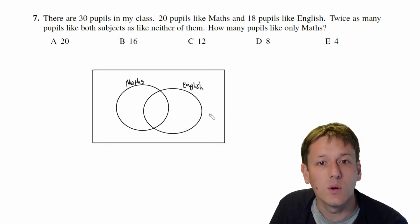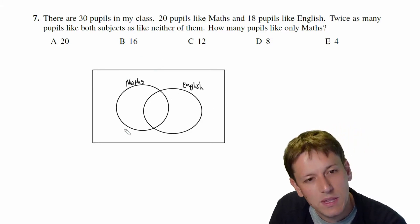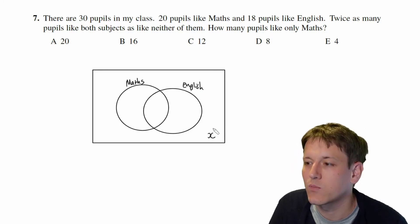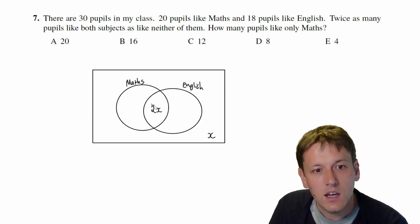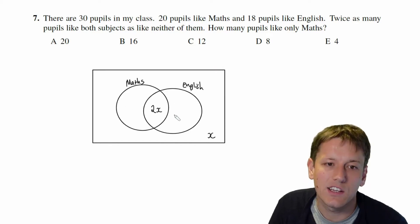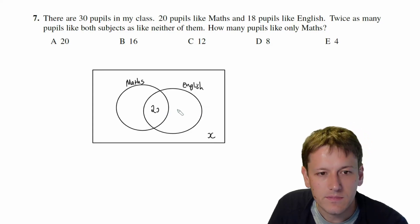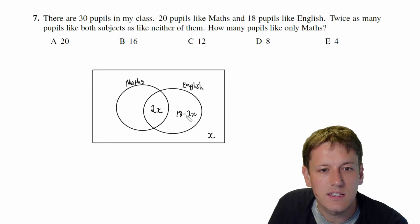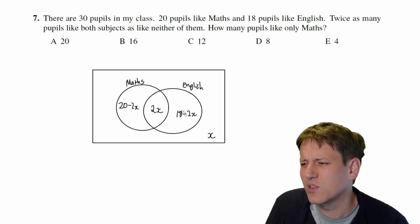Twice as many pupils like both subjects as like neither, so I'll call the number that like neither x, and put 2x in the middle for both subjects. Since 18 pupils like English, the part of the English circle excluding the overlap must be 18 minus 2x. Similarly, 20 like maths, so the maths-only section is 20 minus 2x.